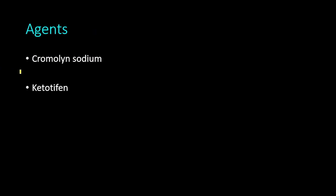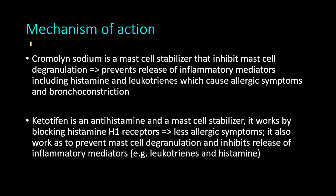The mast cell stabilizers include medications like cromolyn sodium and ketotifen. Cromolyn sodium is a mast cell stabilizer that inhibits mast cell degranulation. The mast cell contains many mediators like histamine and leukotrienes, which are responsible for allergic symptoms and bronchoconstriction in asthma. When cromolyn sodium inhibits degranulation of the mast cell, this prevents the release of those inflammatory mediators, resulting in less allergic symptoms and bronchoconstriction.